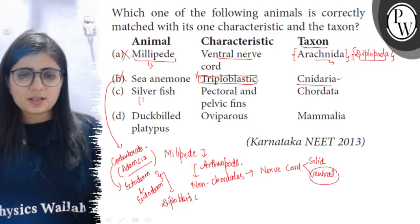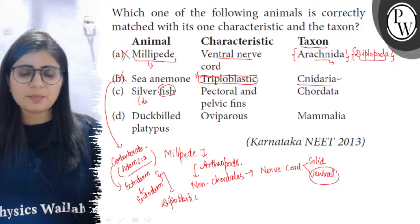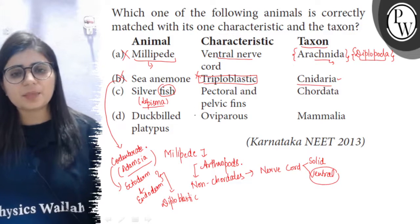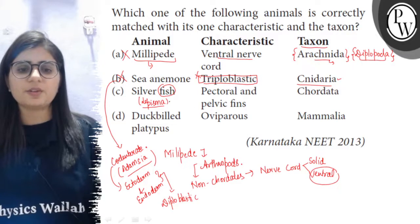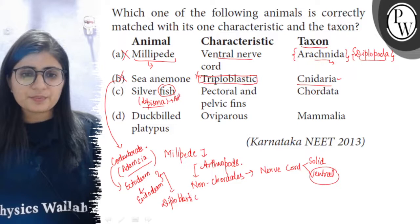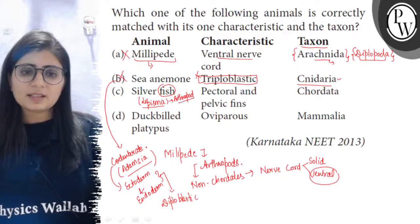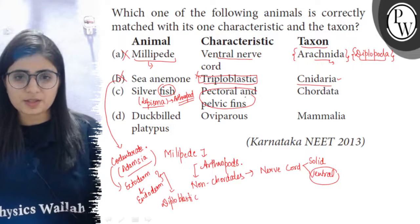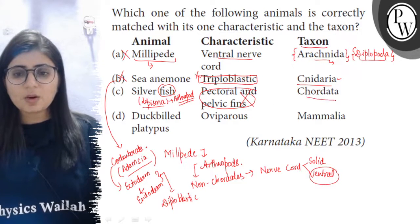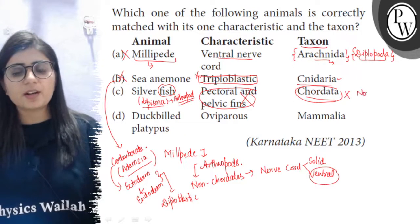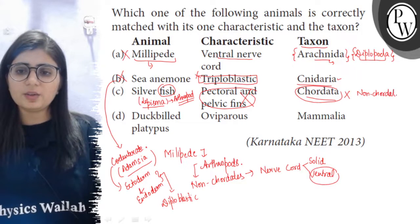The third option is silverfish. Silverfish is not actually a fish — it is a misnomer. Silverfish is an arthropod with the scientific name Lepisma. It has jointed legs, not fins. Presence of fins is a characteristic of fishes, but silverfish does not have fins. Additionally, silverfish is a member of Arthropoda, which are non-chordates because they do not have a notochord. So this option is also discarded.